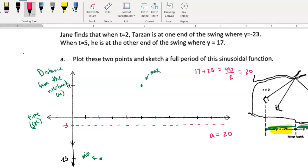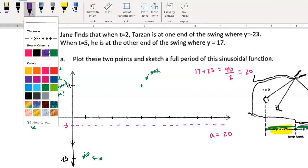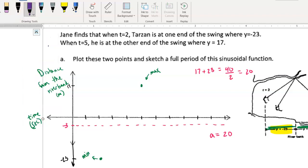Okay. Now we want to figure out, well, what's the period? How long is it going to take for it to repeat itself? Well, here's what I know. I know that from 2 seconds to 5 seconds, he's going to go from one end of the swing to the other end of the swing. So that's a period of time of 3 seconds. There we go.